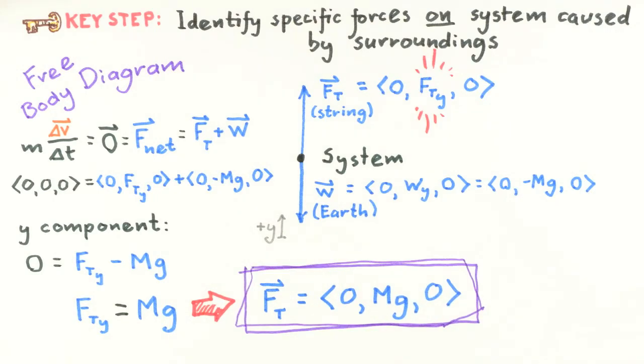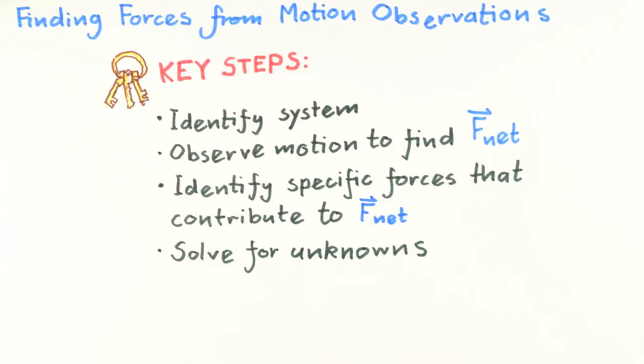In closing, we note here that this problem, where our system is motionless and therefore F net is zero, is an important class of motion cases where the system is said to be in static equilibrium. In our next lecture, we'll do a more complicated example of this, using again these key steps. Let's emphasize here that these steps for finding unknown forces will also work for more general cases, as we'll see later in the next several lectures.